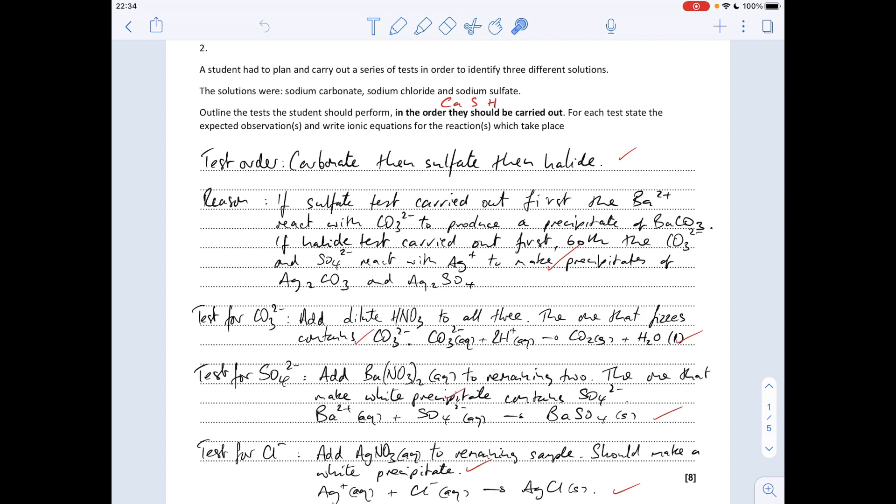If you carry out the halide test first, the carbonate and the sulphate would react with the silver ions to make precipitates of silver carbonate and silver sulphate, so again you're going to get false positives. You're going to think it's some kind of halide whereas in fact it's either a carbonate or a sulphate. So it's the CASH order that you need to do them in.